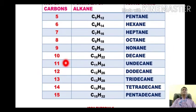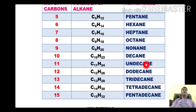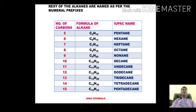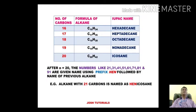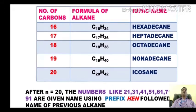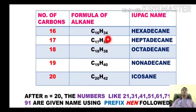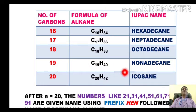For eleven carbons the formula is C11H24 and this alkane is called undecane. With twelve carbons it is dodecane, for thirteen it is tridecane, for fourteen it is tetradecane, and for fifteen it is pentadecane. The one with sixteen carbons, C16H34, is hexadecane; seventeen is heptadecane; eighteen is octadecane; nineteen is nonadecane; and the alkane with twenty carbons, C20H42, is called eicosane.